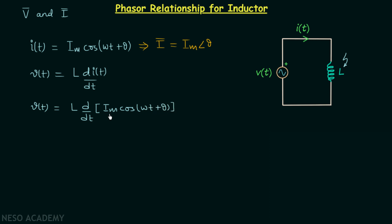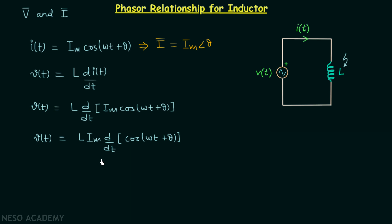Since Im is a constant, we take it out of the differentiation and we have V(t) equal to L·Im times the derivative of cos(ωt + θ) with respect to time. The derivative of cos(ωt + θ) is equal to negative sin(ωt + θ) multiplied by ω, so V(t) is equal to negative ωL·Im·sin(ωt + θ).